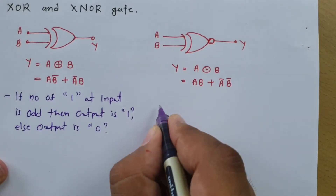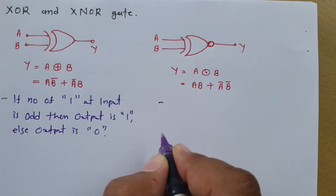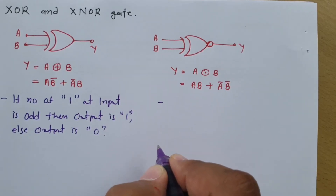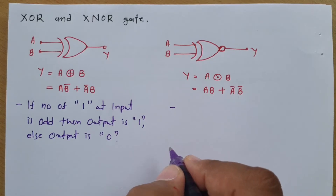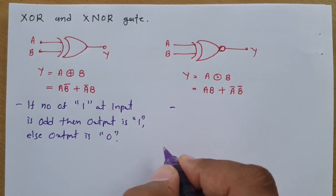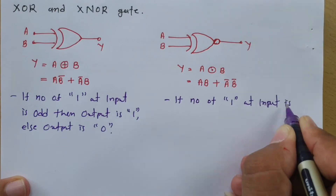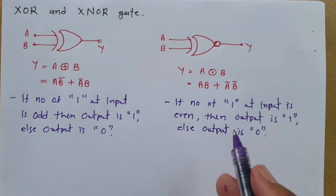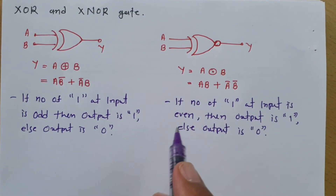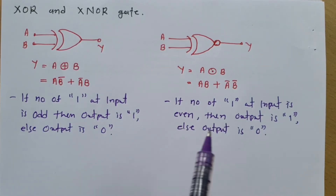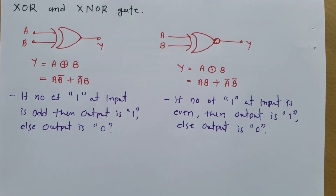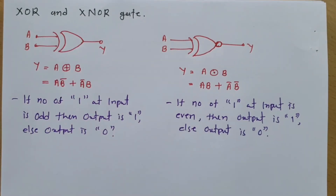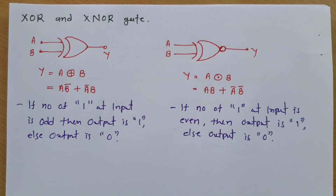For XNOR gate, if the number of 1s at input is even, then our output is 1; else our output is 0. This is how XOR and XNOR gates function. Now let us make a truth table from this working.